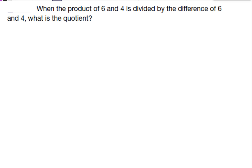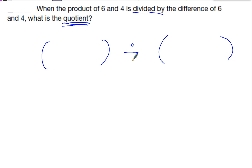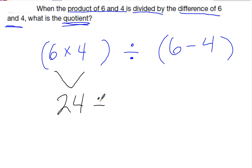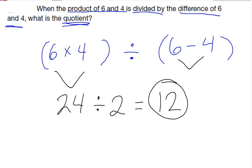The next problem: when the product of six and four is divided by the difference of six and four, what is the quotient? The first parentheses is the product of six and four — six times four. The second parentheses is the difference of six and four — six minus four. Six times four is 24, six minus four is two. So 24 divided by two is 12, and that's my answer.